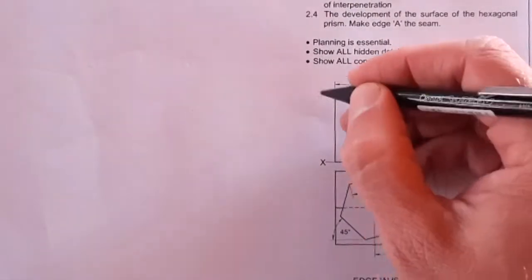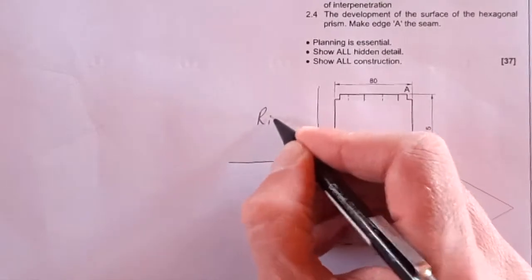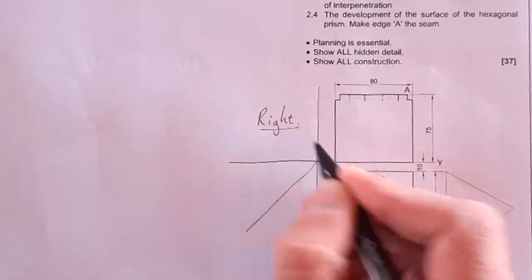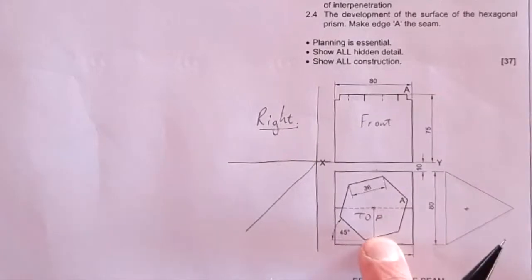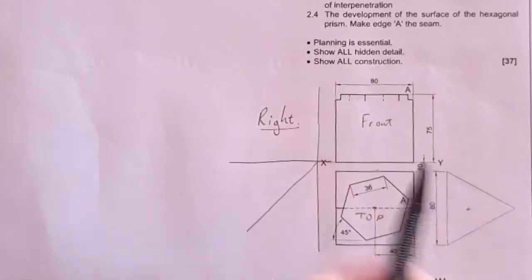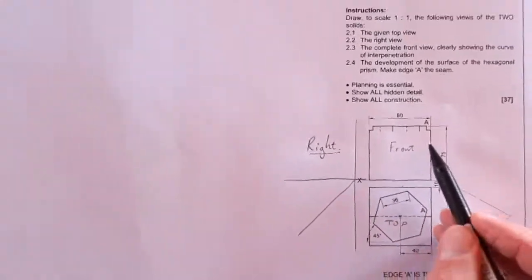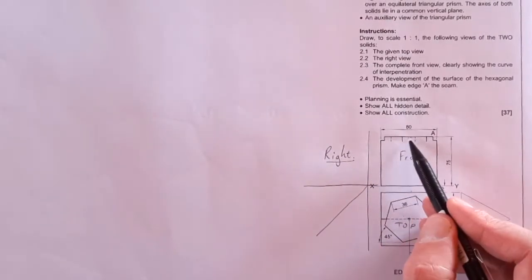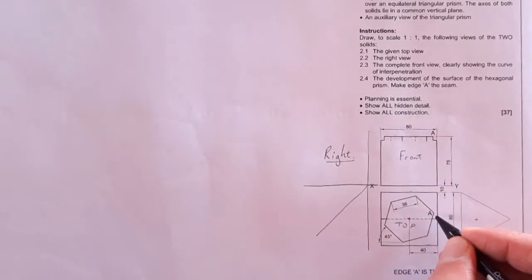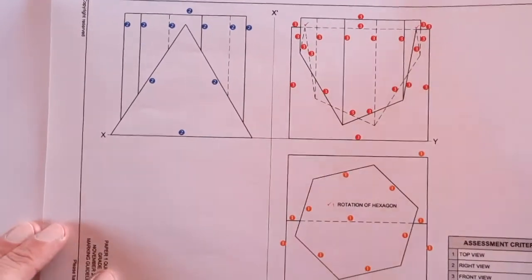What do you have to draw? You have to draw the given top view, then a right view — remembering that in first-angle orthographic projection you extend your XY at 45 degrees and the right view goes there. You also have to draw the complete front view with the curve of interpenetration, and the development of the surface of the hexagonal prism — the main pipe — making corner A the seam.